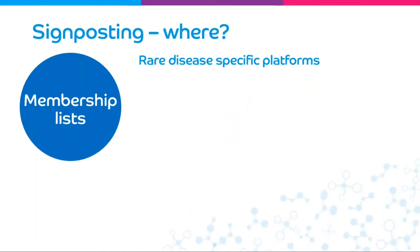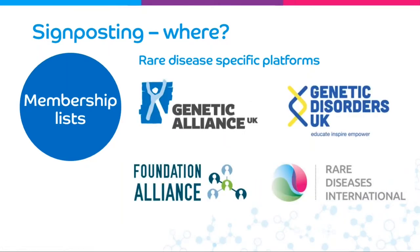The third category for rare disease specific platforms is membership lists — public lists that umbrella rare disease organisations have of all their members. Generally speaking, other than the Genetic Disorders UK partnership network, it costs money to be a member of these, though the exact cost tends to be based on your organisation's income. Membership has a lot of bonuses: it means you've got extra searchability, extra credibility, and plenty of other membership benefits. It's up to you to decide whether you would like to join them and weigh up the cost versus the benefits. These are just a few that I've pulled out — there are plenty more membership lists.